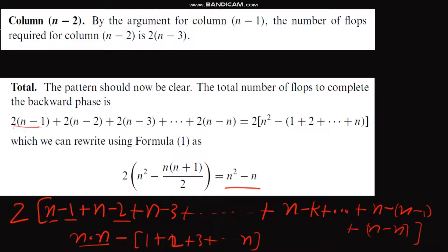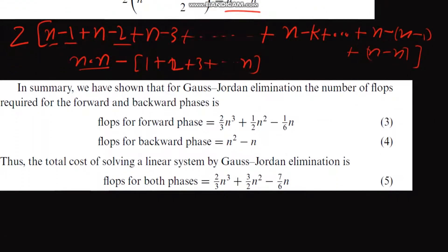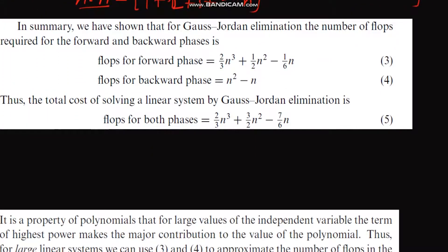Okay, now come to the conclusion. In summary, we have shown that for Gauss-Jordan elimination, the number of flops required for the forward and backward phases are: the forward phase requires 2 upon 3 n cube plus 1 upon 2 n square minus 1 upon 6 n, and the flops for the backward is n square minus n.